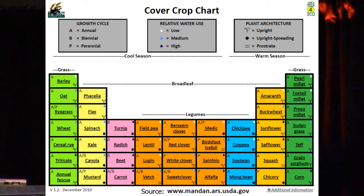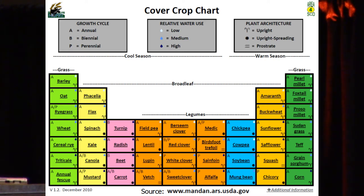Just like we studied the periodic table of elements that this table models, we can learn a lot about each of these individual species. But if we're starting out, this table is organized into grassy species — this chunk in the middle — and broadleaves. We've got warm season grasses and cool season grasses, and within the broadleaves, a chunk that are legumes in the middle. Each one is rated based on its growth cycle, water use — high or low — and how it grows: upright or prostrate, and whether it will spread.